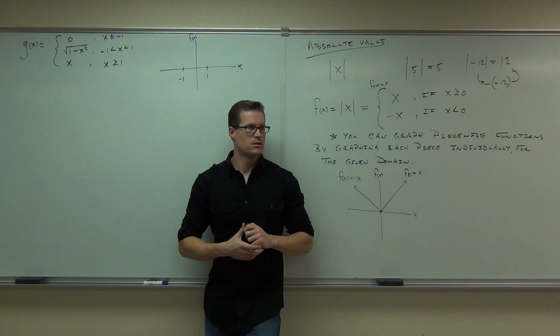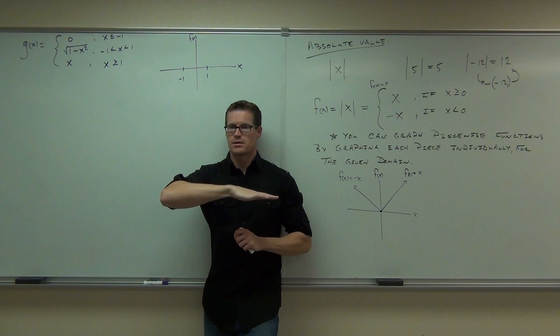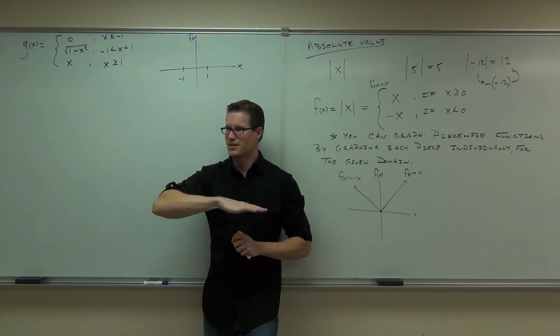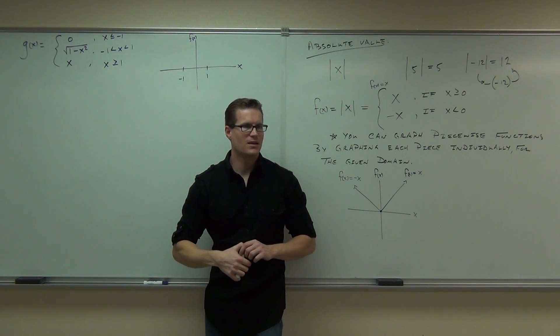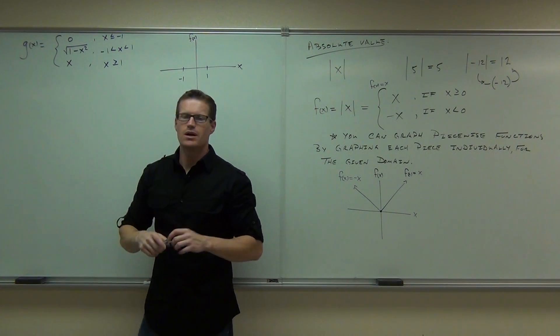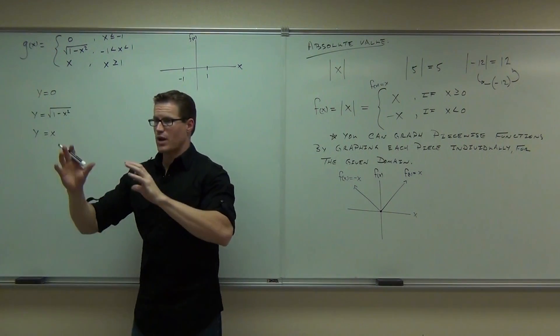It says x is less than or equal to negative one, so we know we're this way. What do we have to graph for this piece right here? Zero. What's zero mean? Horizontal line. If the whole grouping of this kind of confuses you, just write them out differently. Say that you have y equals zero for a certain bit. Say you have y equals the square root of one minus x squared for a certain bit. Say you have y equals x for a certain bit. It's the same thing. You're just grouping all these together in one function and graphing them piece by piece.